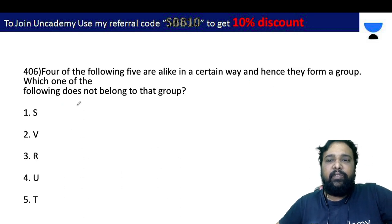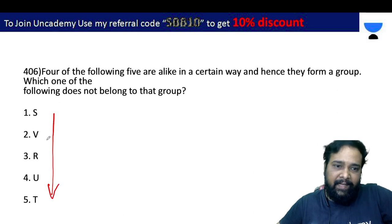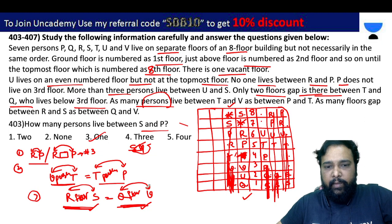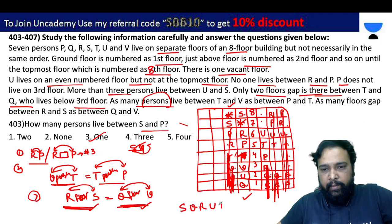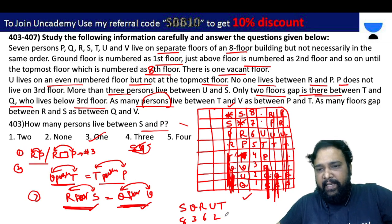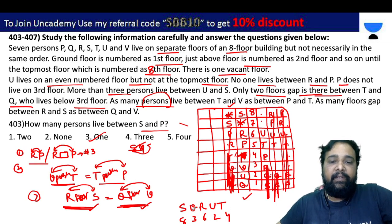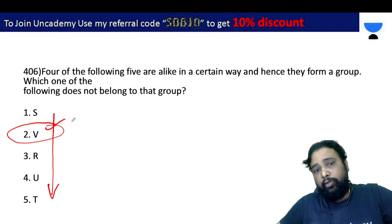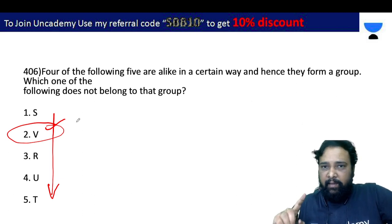Four of the following five are alike in a certain way. Consider S, V, R, U, T. S is on the 8th floor, V is on the 3rd floor, R is on the 6th floor, U is on the 2nd floor, T is on the 4th floor. All have even floor numbers except V, who is on the 3rd floor — an odd floor. So V is the odd one out.